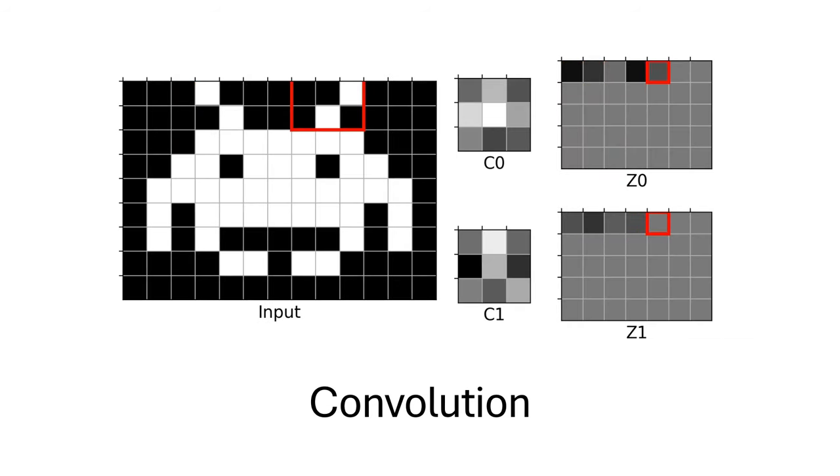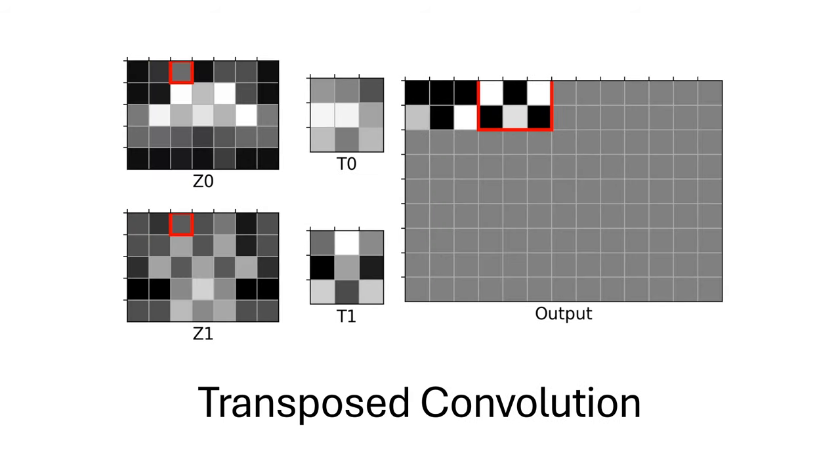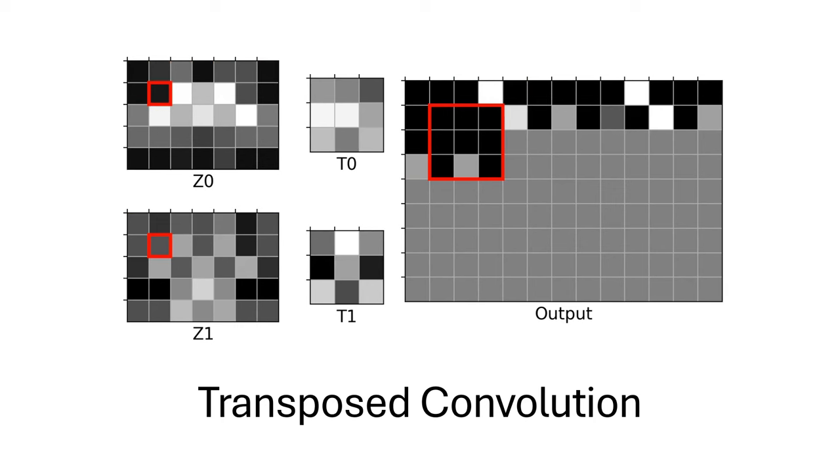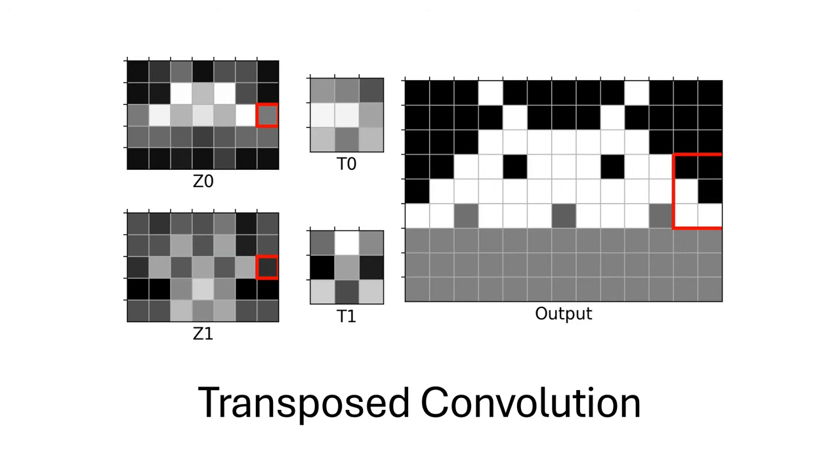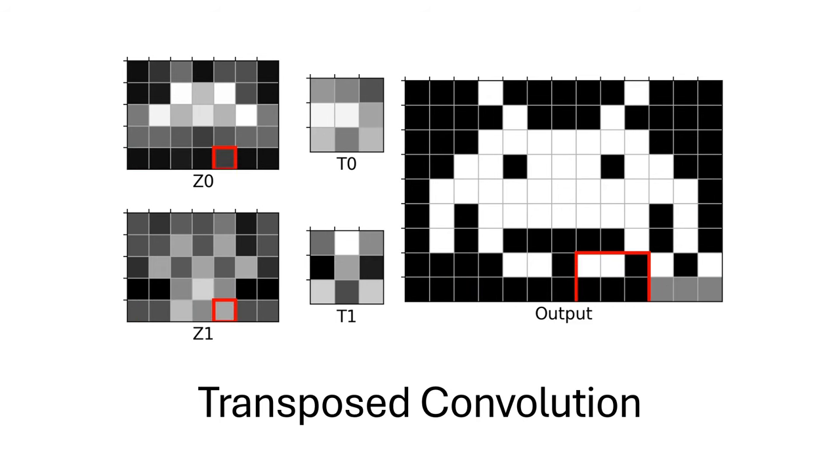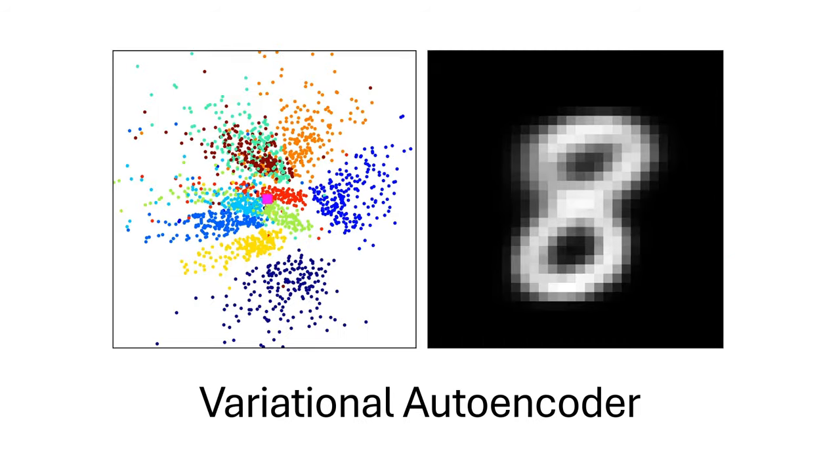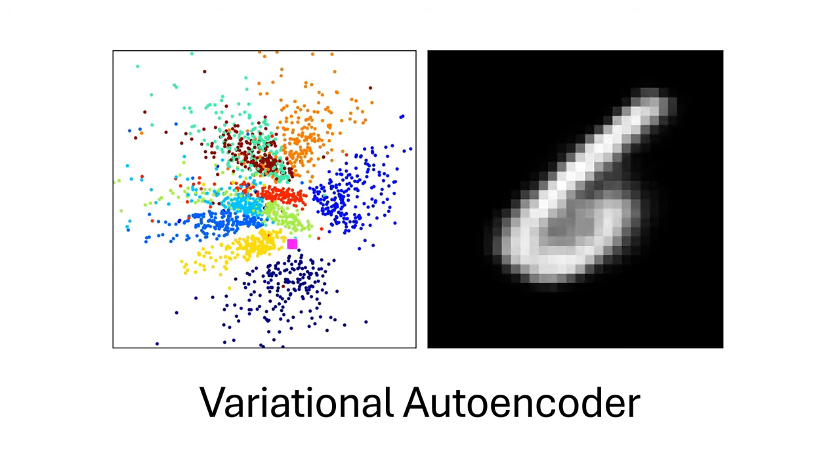This is the convolution animation from earlier. Here we have two filter kernels which are being applied at a stride of two with a padding of one. We end up with two very different scaled images, which do not resemble the original. However, those two filter kernels were chosen very carefully. This animation shows a transposed convolution filter kernel turning the semantic information back into spatial information. As you can see, we are able to perfectly reconstruct the original image.